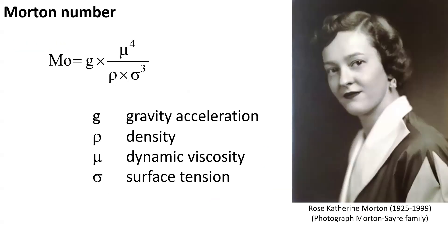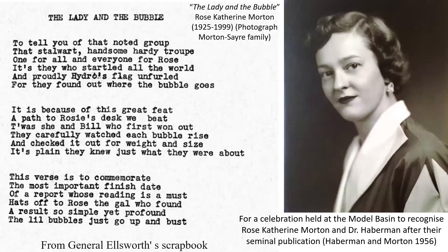How can we simplify this? One way is to introduce the Morton number, which is a function of gravity acceleration, density of the fluid, dynamic viscosity of the fluid, and surface tension — a number named after Rose Catherine Morton. A poem, 'The Lady on the Mobile,' was dedicated to her as part of a celebration for her seminal contribution with Dr. Habermann in the famous paper Habermann and Morton, 1956.